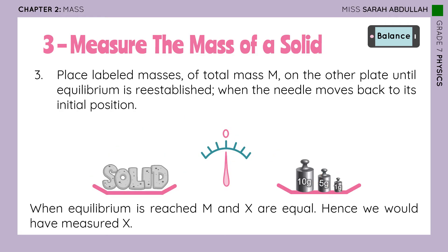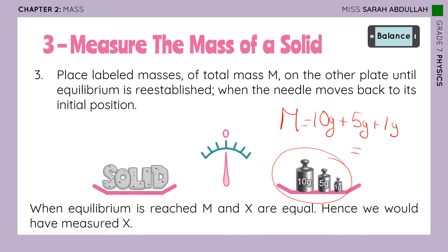When equilibrium is reached, M and X are equal — the total mass M equals the mass of the solid X. So we would have measured X. In this case, it's 10 grams plus 5 grams plus 1 gram, which makes a total of 16 grams. The mass of the solid is also 16 grams because we have equilibrium. And just like that, you found the mass of the solid.